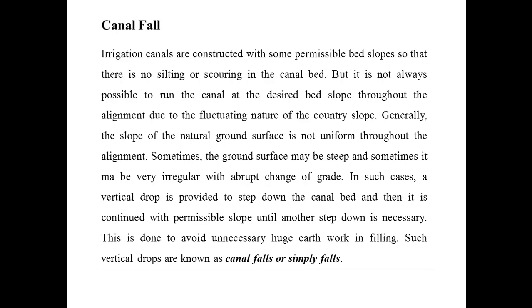What is a canal fall? Irrigation canals are constructed with some permissible bed slope so that there is no silting or scouring in the canal bed. But it is not always possible to run the canal at the desired bed slope throughout the alignment, due to the fluctuating nature of the country slope. Generally, the slope of the natural ground surface is not uniform throughout the alignment.